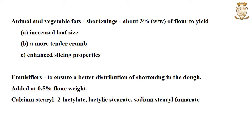Animal and vegetable fats are added as shortenings in bread making at about 3% of flour in order to yield increased loaf size, a more tender crumb and to have enhanced slicing properties. Animal and vegetable fats generally added are butter, lard or soybean oil.